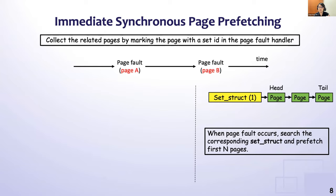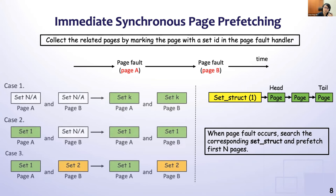The rationale behind immediate synchronous page pre-fetching is that pages faulting close together in time may be evicted together and cause faults together the next time. We design a fault-aware pre-fetch set to mark pages with suitable set IDs. Assuming pages A and B are accessed sequentially, there are three cases: both pages do not belong to any set, so allocate a new same set to both; one belongs to a set, so add the other to the same set; or they are in different sets, so no change is made.